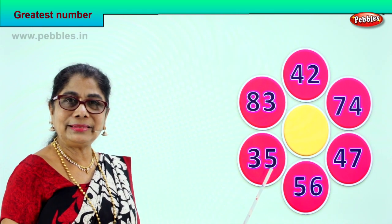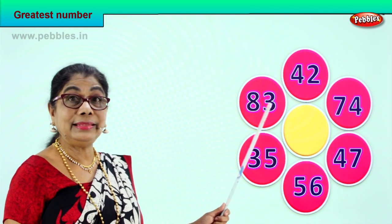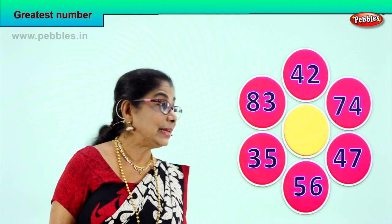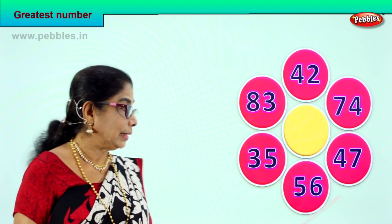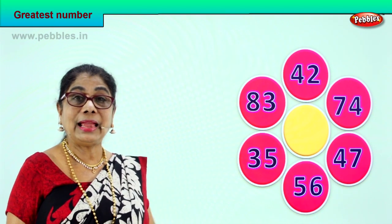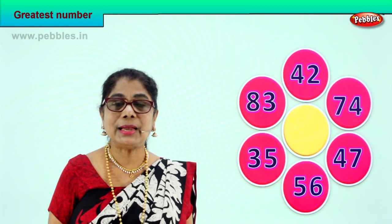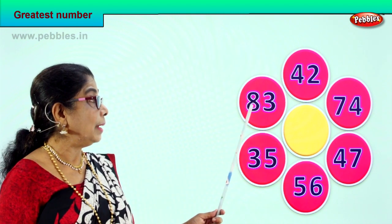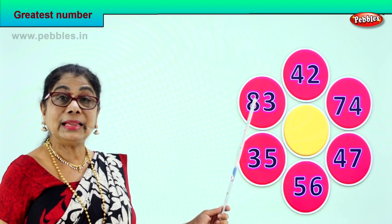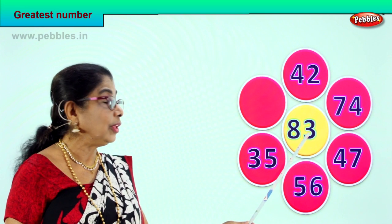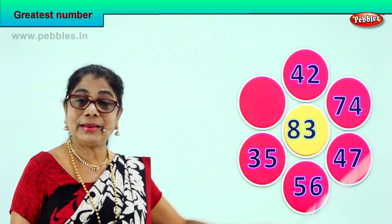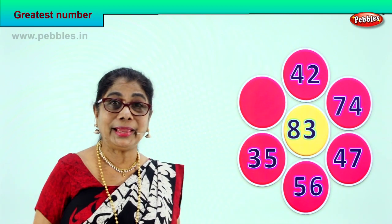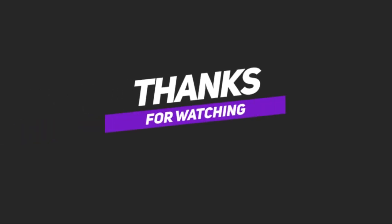Let's take another exercise. 35 has 3 tens. 83 has 8 tens. 42 has 4 tens. 74 has 7 tens. 47 has 4 tens. 56 has 5 tens. Among all the 6 numbers, which number has the highest in the tens place? 83 has the highest number of tens — 8 tens and 3 ones. 83 is the greatest, biggest of all among the 6 numbers. Good job!